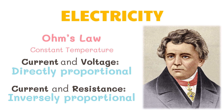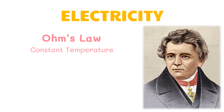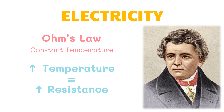Take note that Ohm's law is only applicable if there is a constant temperature. Once temperature changes, there will be changes to the resistance as well. As temperature increases, resistance increases at the same time. When a material gets hotter, the atoms in the material vibrate more, as we have discussed in our previous module about heat. This makes it difficult for the electrons to move without interaction with an atom, thus increasing resistance.